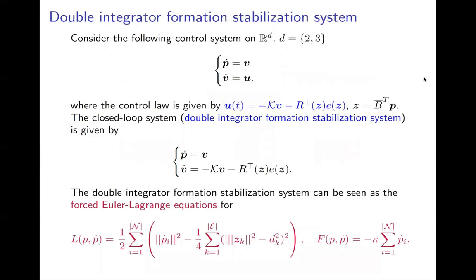We consider agents with double integrator dynamics, that is, we control accelerations of the robots. Under this control law in color blue, in terms of the gain matrix K and the rigidity matrix R, the system is exponentially stabilized to the desired formation. The closed loop system is called double integrator formation stabilization system.